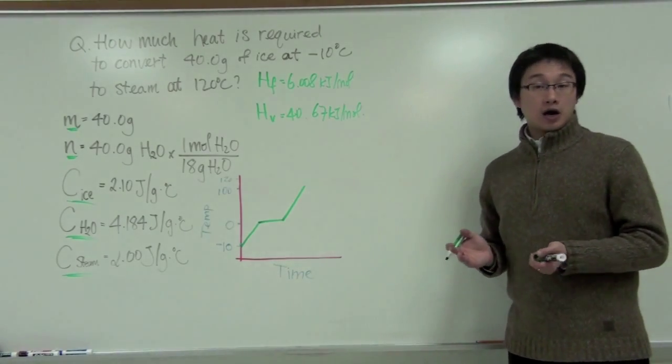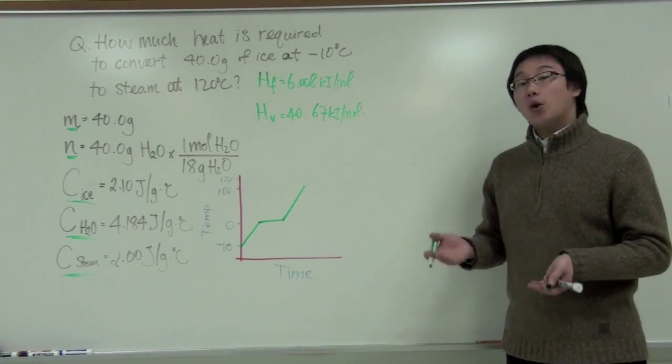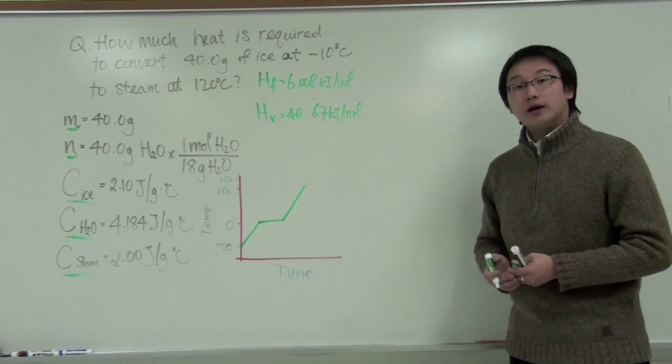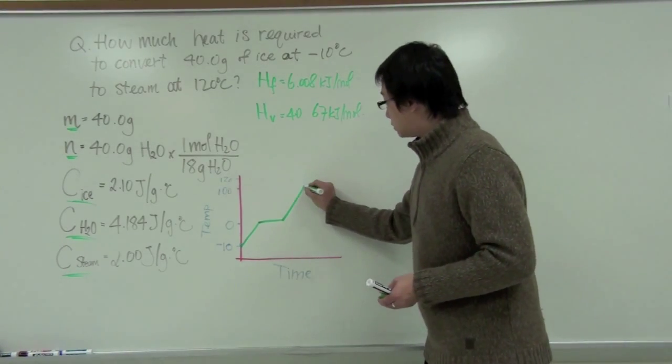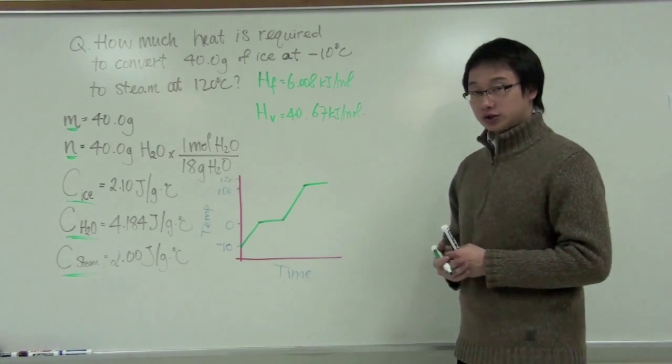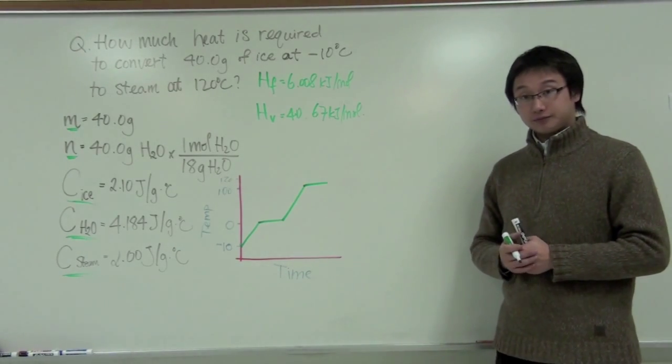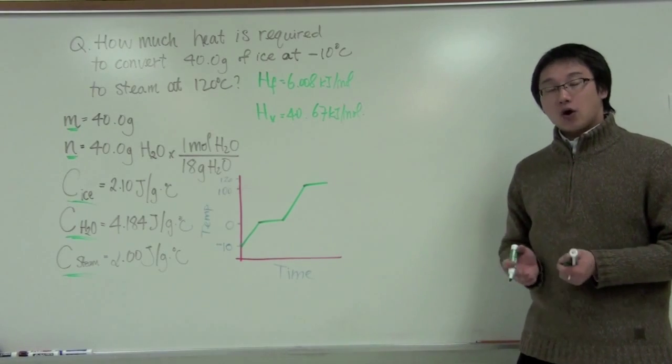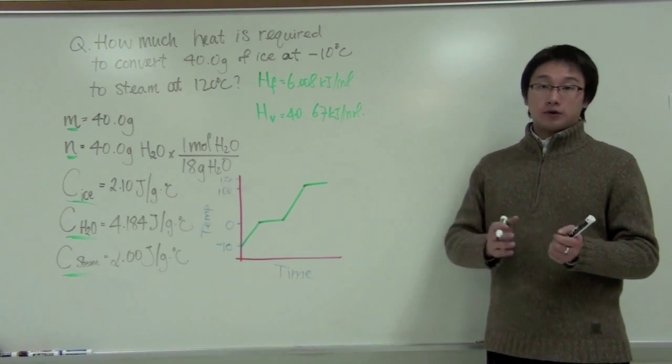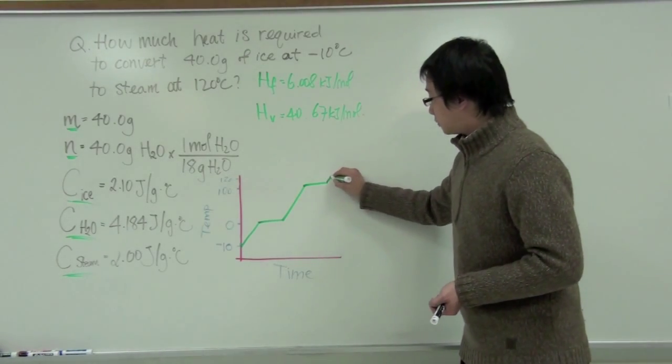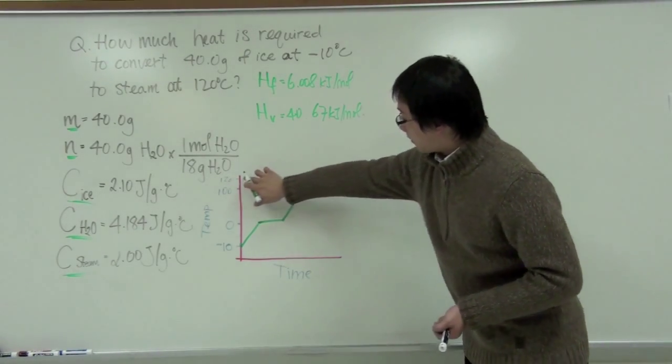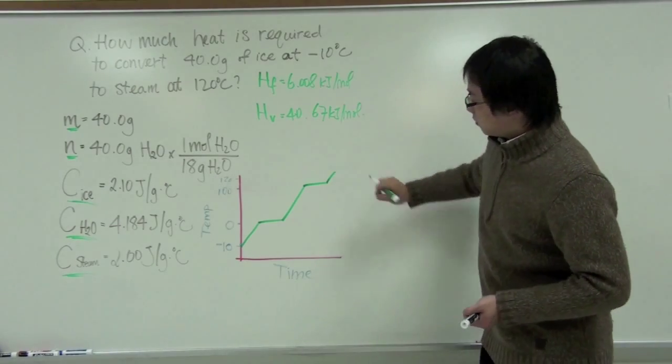Once it reaches 100 degrees Celsius, which is the boiling point of water, it will change from water to steam. So we will expect to see another flat section of the graph. After all the water is now in the form of steam, it will continue to increase temperature and then it will stop at 120.